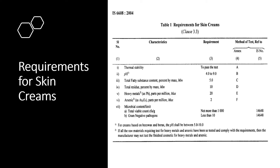The fourth test is the total residue test, which needs to be performed on all skin creams — the value should not be less than 10. The fifth test is the heavy metal content: the maximum allowed for total heavy metals is 20 ppm, and it should not exceed that figure.